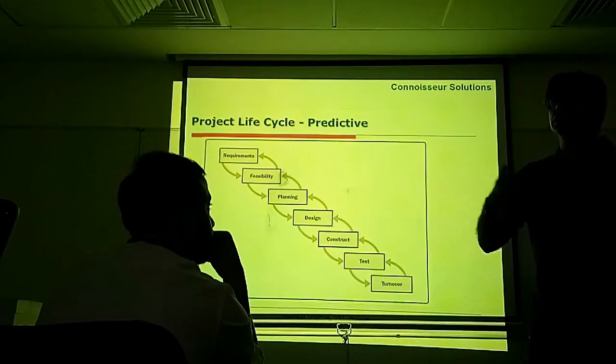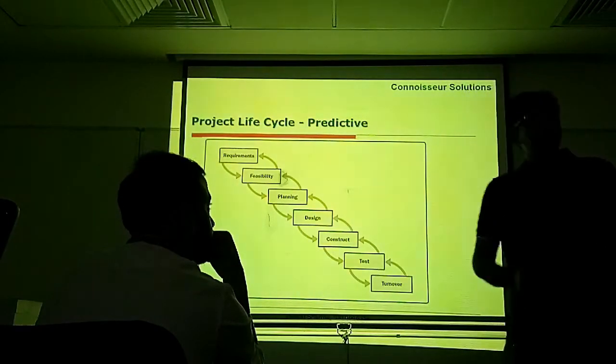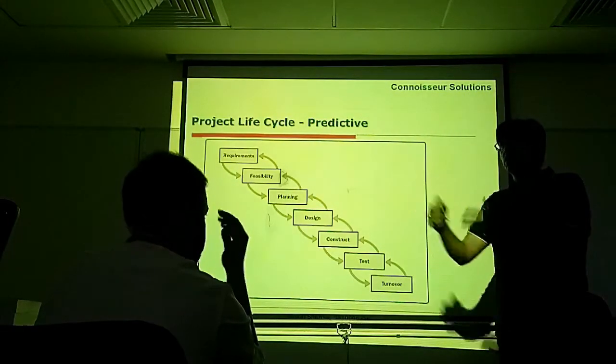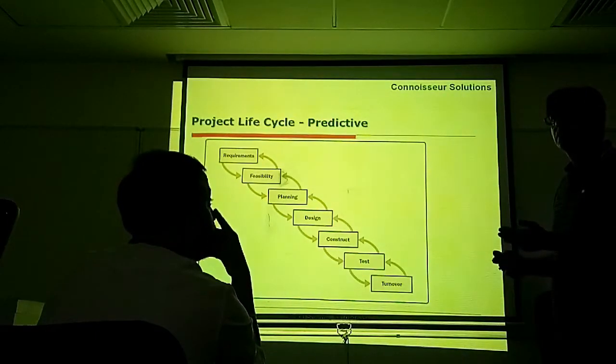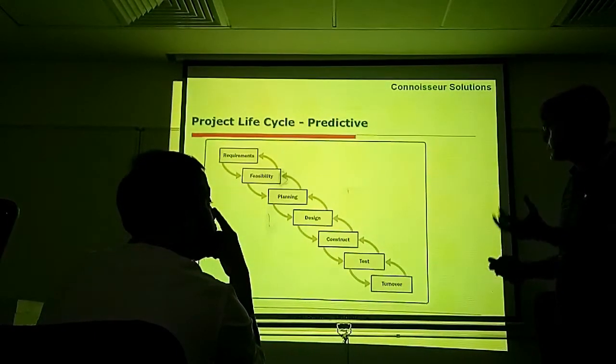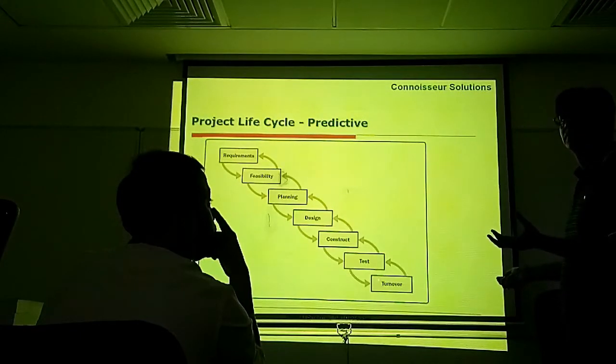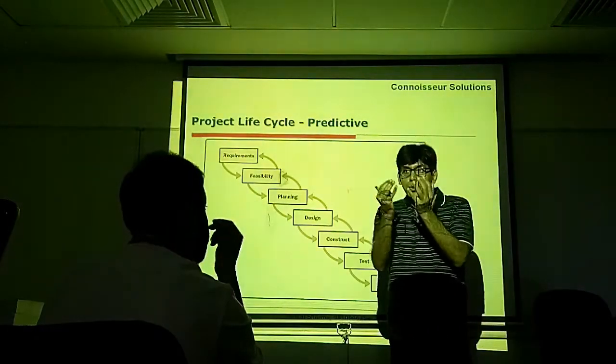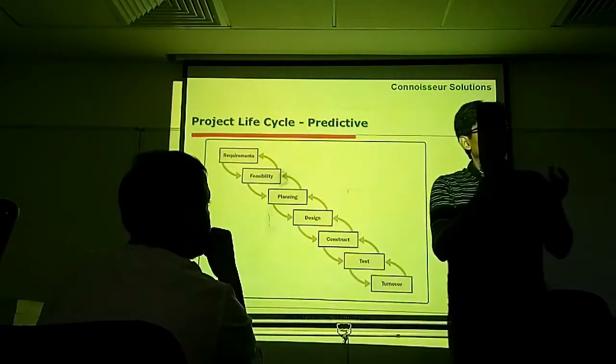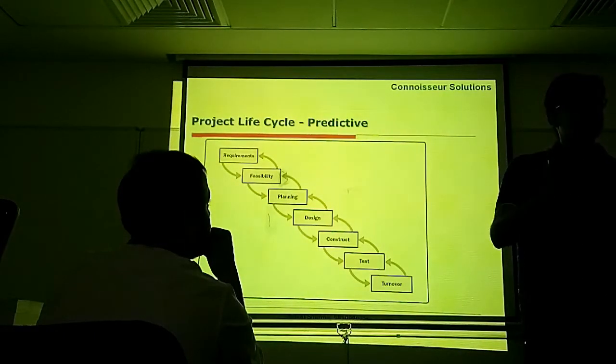Now let's see what are the challenges. In a predictive life cycle or waterfall model, customer is able to see the final workable product at the end. Now it might be possible that when he actually sees the working product, he may not like it.